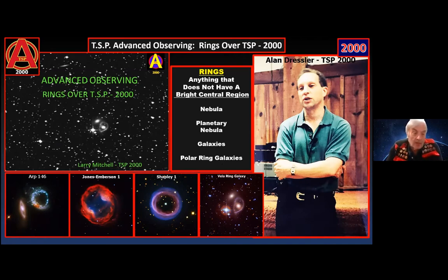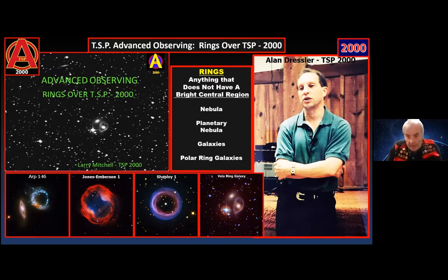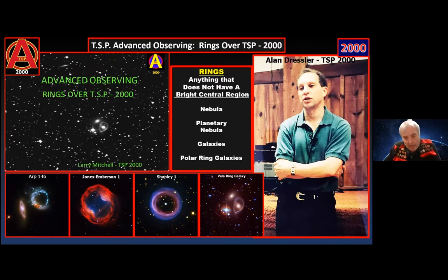That year we had Dr. Alan Dressler as keynote speaker. Dr. Dressler is famous among galaxy people — he was one of the proponents studying what's called the Great Attractor. His group called themselves the 'Seven Samurai.' He discovered that our part of the universe is moving toward the Virgo galaxy cluster, which is moving toward the Laniakea supercluster, which is moving toward the Great Attractor, which is moving toward what's called the Shapley supercluster. He gave a wonderful talk and has since immersed himself in more work on galaxy evolution.